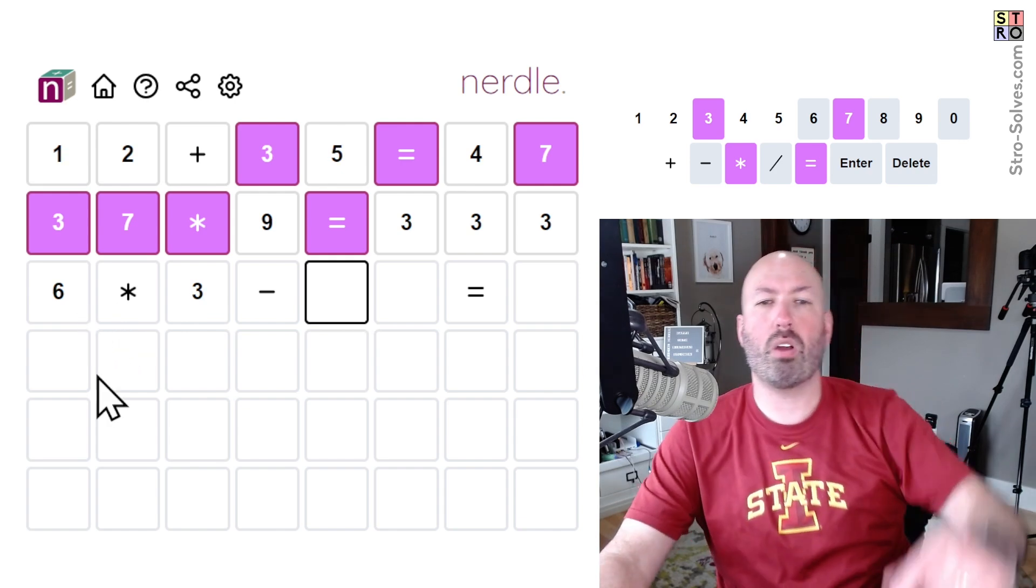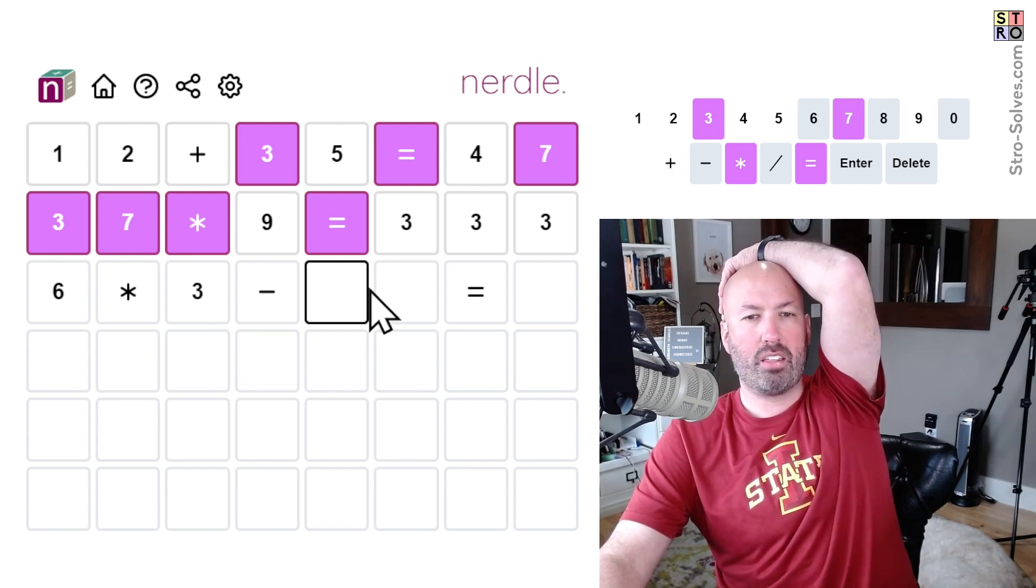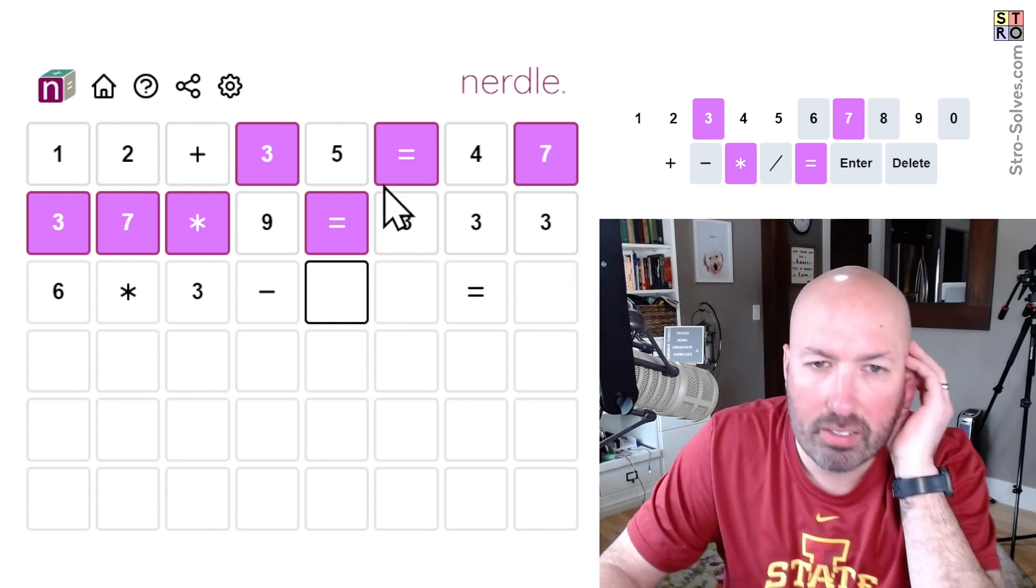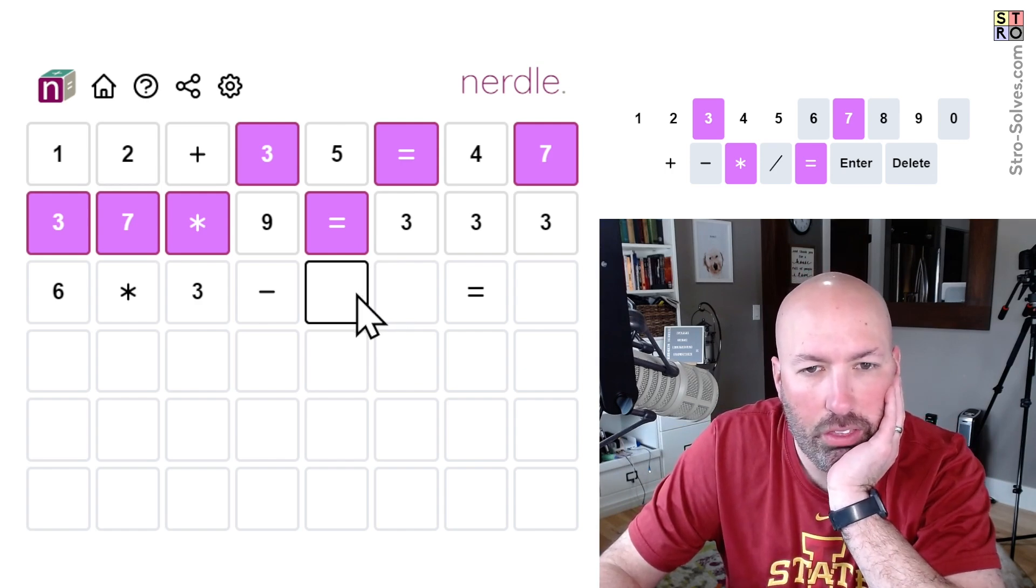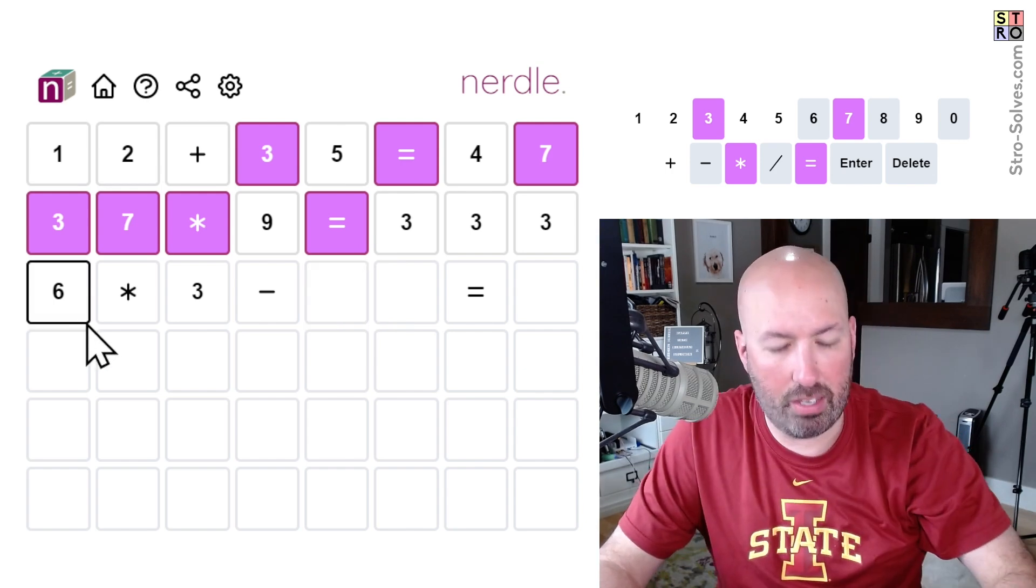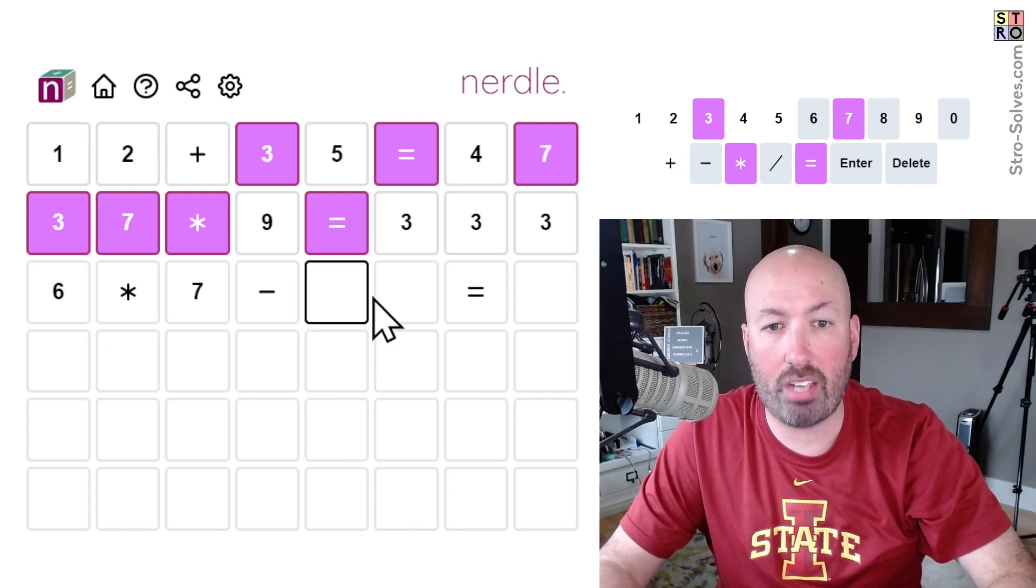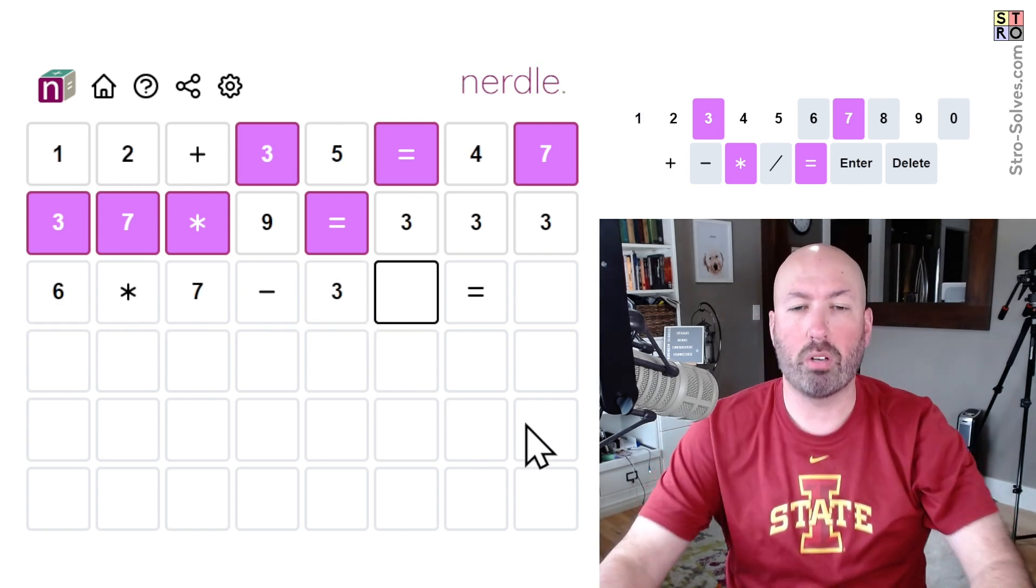Oh, but we need, oh right, right, right, right. So if we're subtracting a two digit, then the two digit number has to be at least 30 though. Right, so maybe six times seven which is 42 and then we subtract 30 something, that would work, that would work, we could subtract 30.